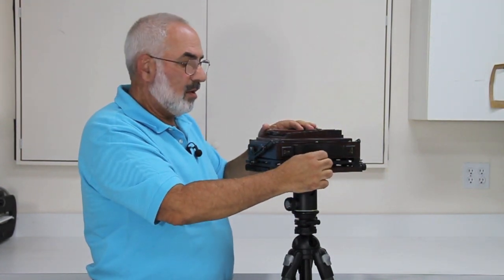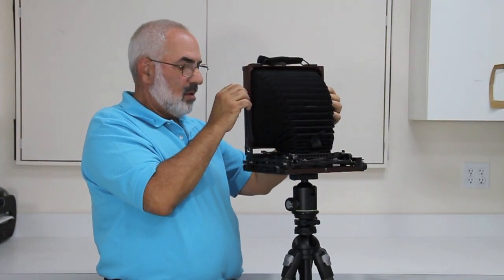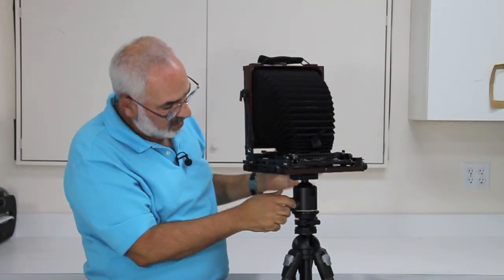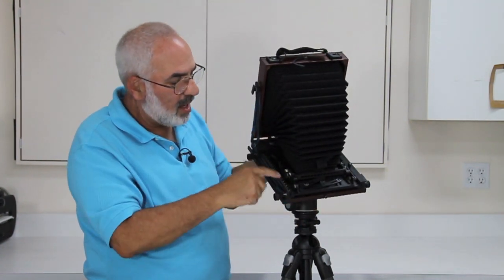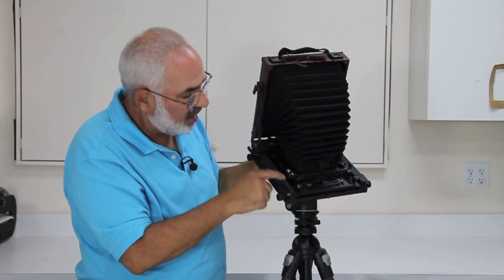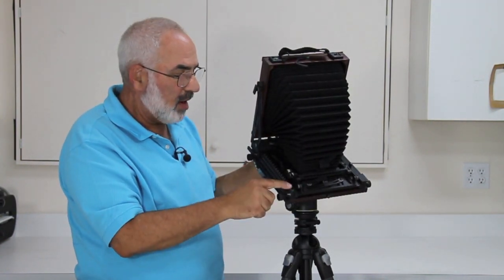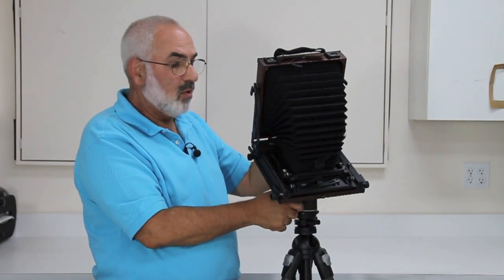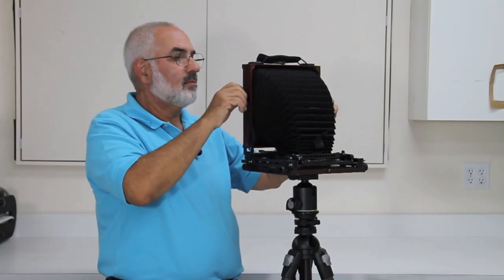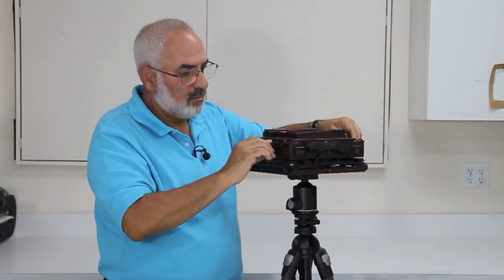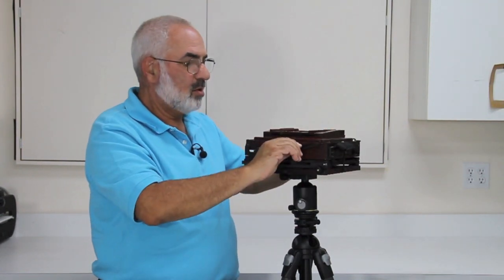One thing, there's one thing I forgot to show you. Let's undo these. Let me just tilt this a little bit. When you look on both sides of the front standard, actually just right here on one side, one side there's a focusing scale. So it's always on the right side. And that's great for focusing, which I'll do in another video. Just put this back. Let me just fold it up. Lock this down, lock these two, and we're all set.